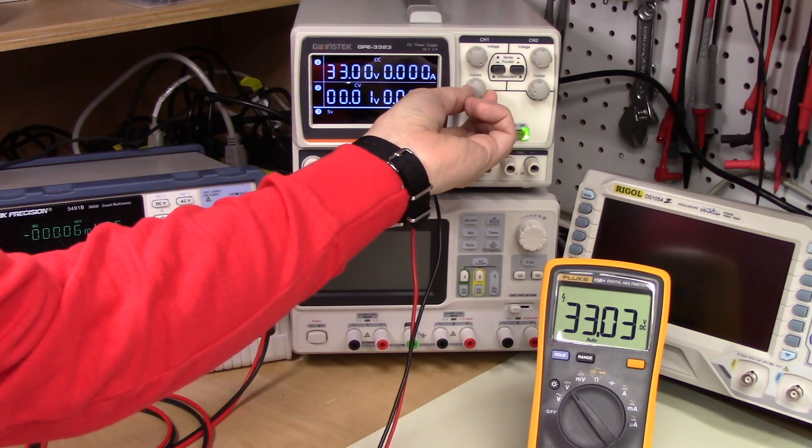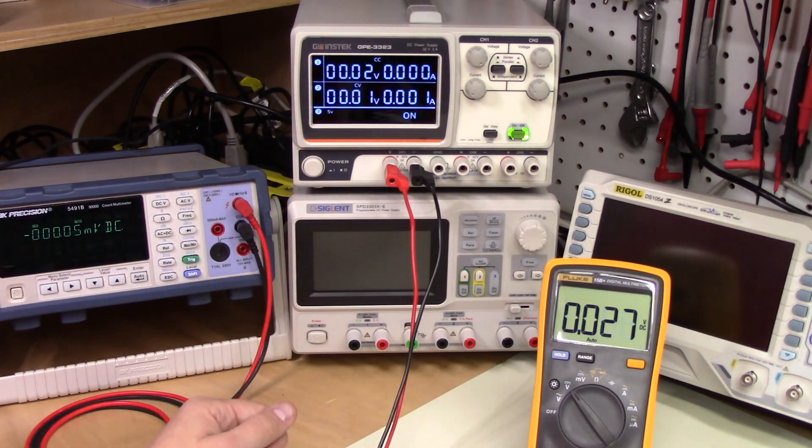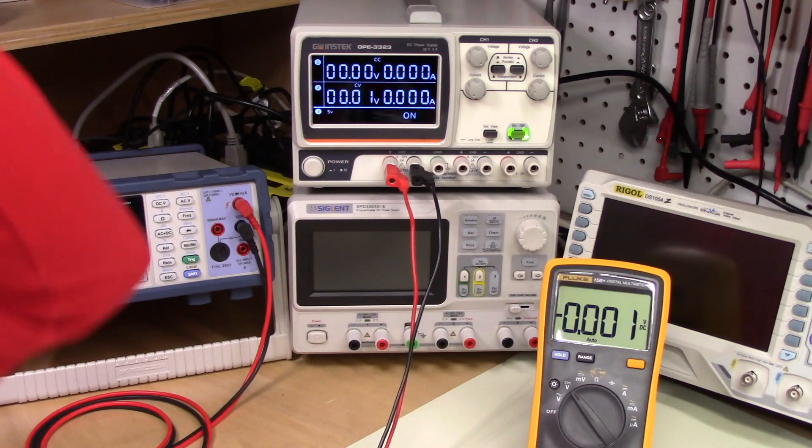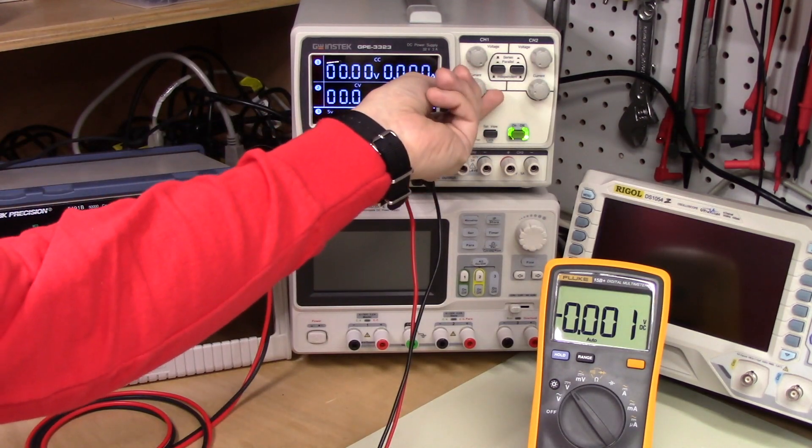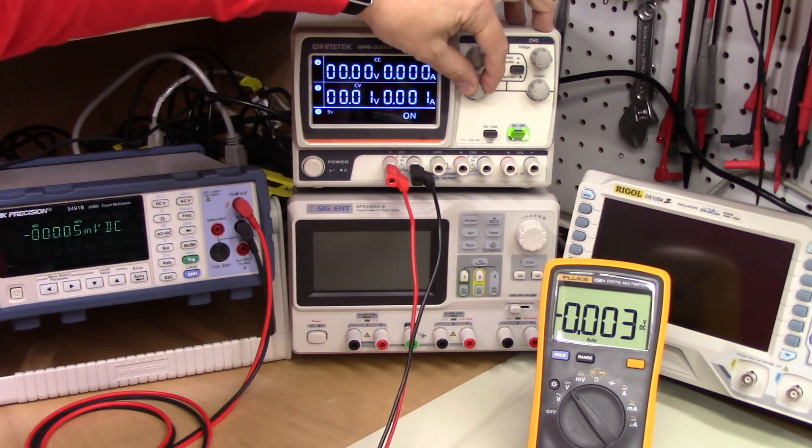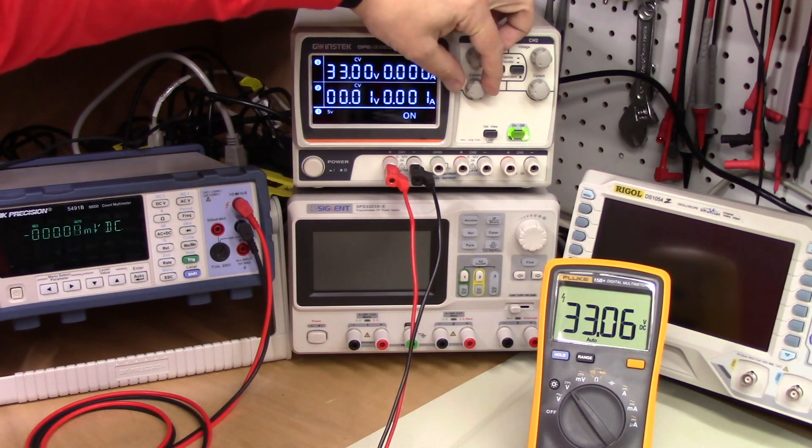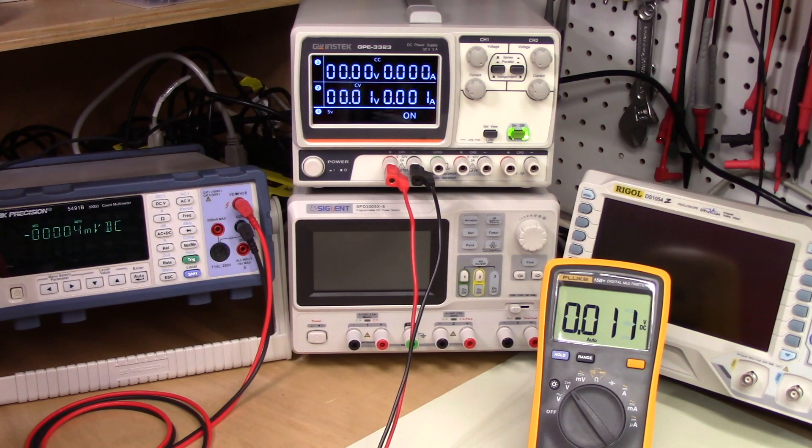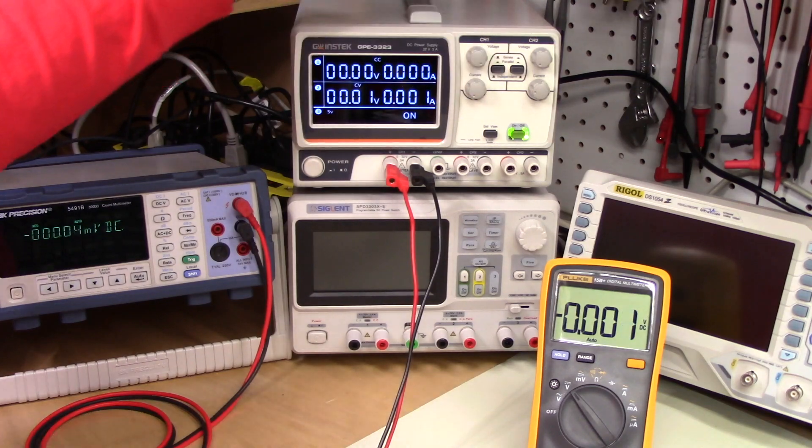If I now limit the current, you see that the voltage dies as well. This will draw very little current and then as I crank it down to zero, it just cuts the voltage off. And you can hear it, you can hear the relays flapping inside.